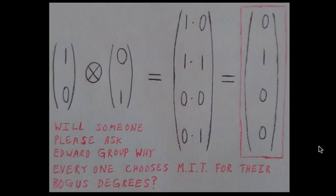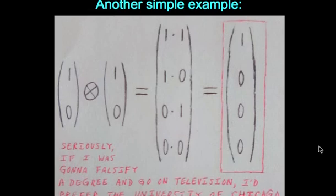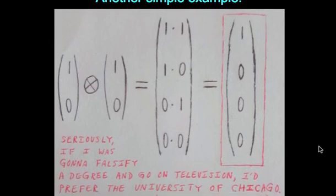And if you don't know who Edward Group is you're probably better off. Another example using the ones and zeros is 1, 0 cross 1, 0, giving us 1 times 1, 1 times 0, 0 times 1, 0 times 0. All that equaling a four by one vector of 1, 0, 0, 0. Very, very simple this thing is. And I just wish somebody had put on more examples on Wikipedia.